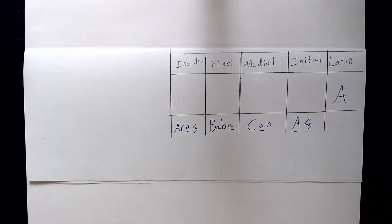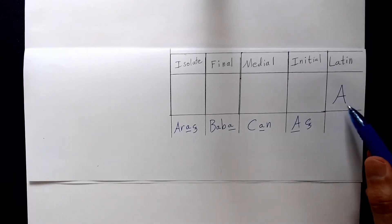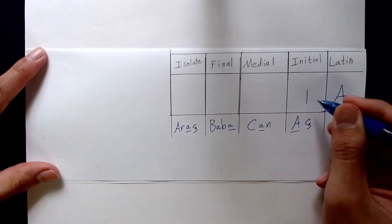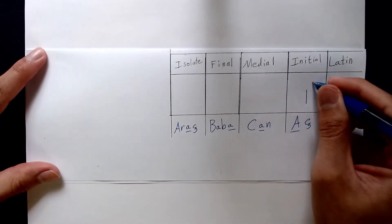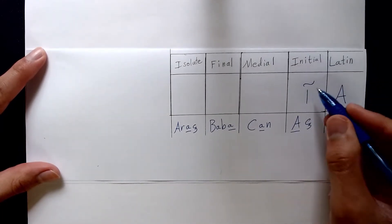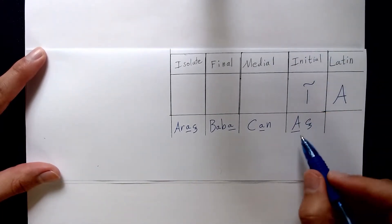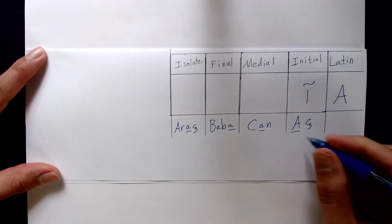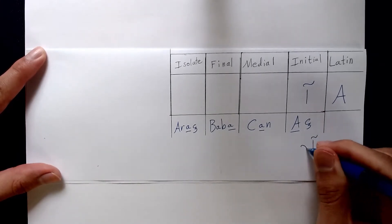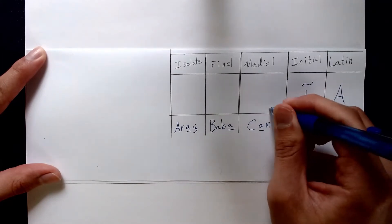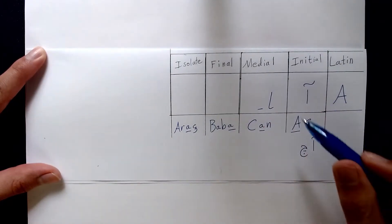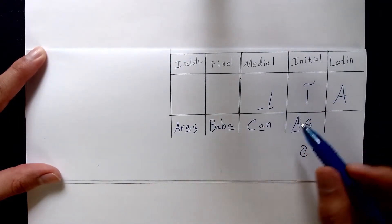The first letter is A. In the initial position, we write this with an Elif with the symbol of Med on top of it. So if we want to write the word Ach, it would be written like so. In the medial position, however, we don't put any symbol on top of the Elif — we just leave it alone.